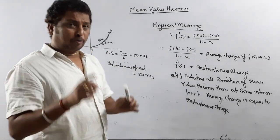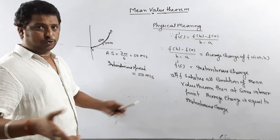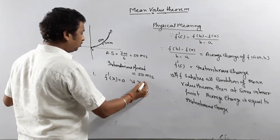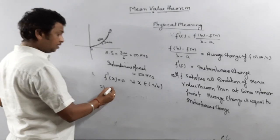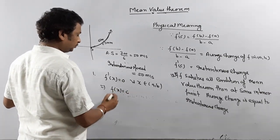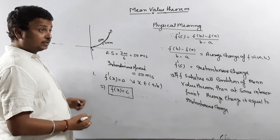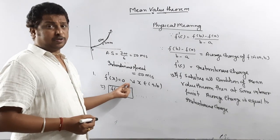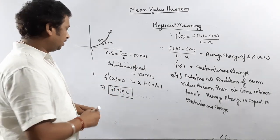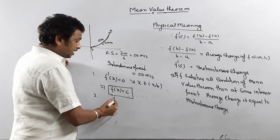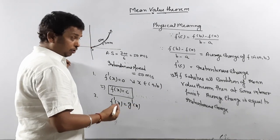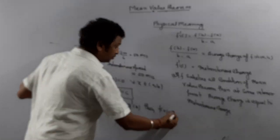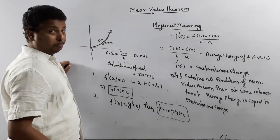Now some corollaries come from the Mean Value Theorem. First: if f'(x) = 0 for every x in (a, b), then f(x) is constant throughout the interval. This result comes from the Mean Value Theorem. If the derivative of any function is zero, the function must be constant. Second corollary: if f'(x) = g'(x) for functions f and g on (a, b), then f(x) = g(x) + C. Both are corollaries of the Mean Value Theorem.